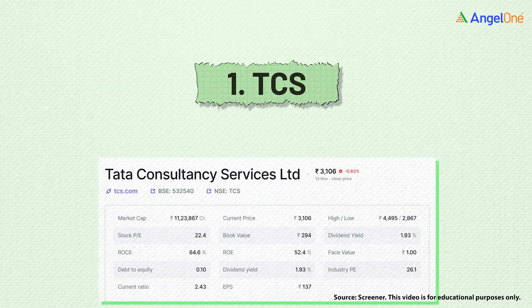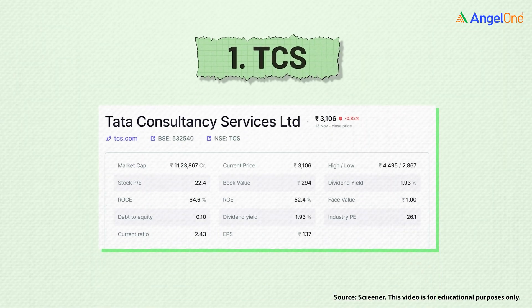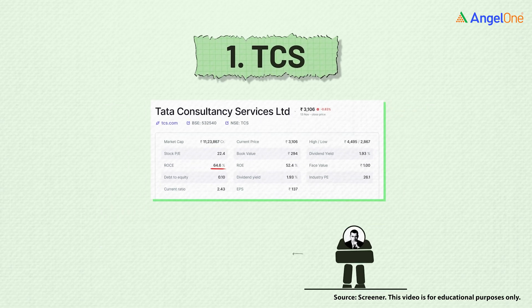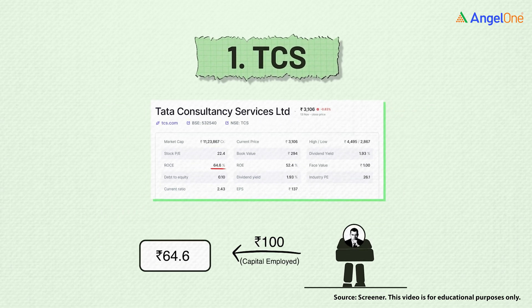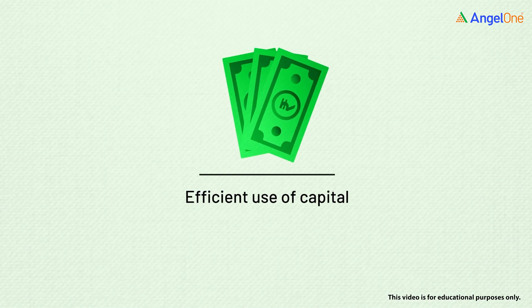Now let's look at the companies we mentioned earlier and understand the nuances of ROCE. First, let's look at TCS. TCS has an ROCE of 64.6%, which means it earns 64.6 rupees for every 100 rupees of capital employed. On the surface, this strong ROCE reflects efficient use of capital, and you can see the returns it has delivered over the years.